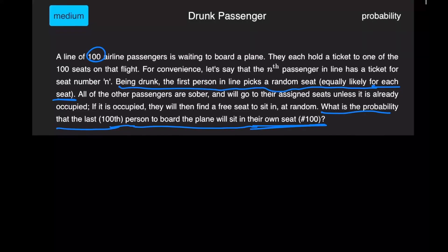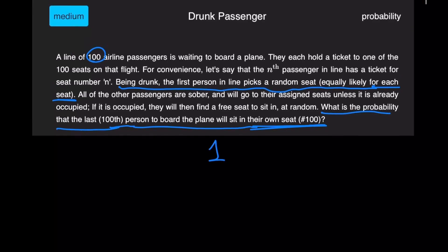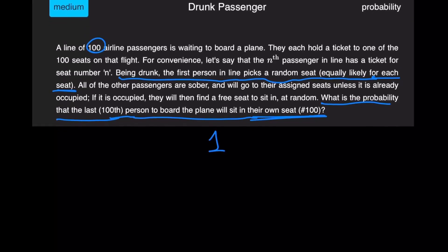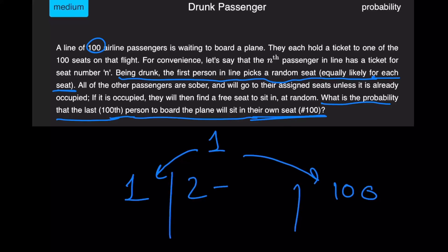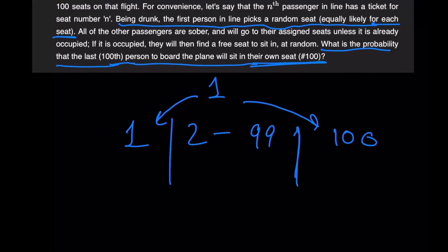The best way to talk about the solution is to visualize what's going to happen. Let's start with random values. Person number one starts off, and since they choose a seat at random, it could be seat 1, it could be seat 100, or it could be any value between 2 and 99. There's a particular reason I'm representing these cases this way, and you'll understand in a bit. Basically, if person number one chooses seat number one...